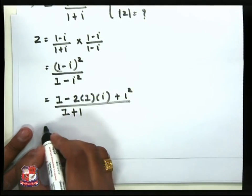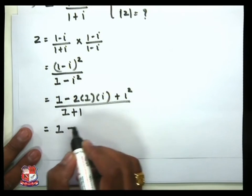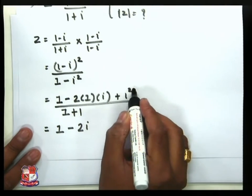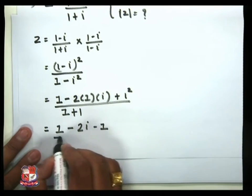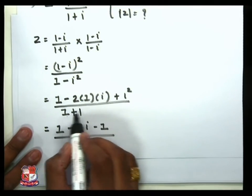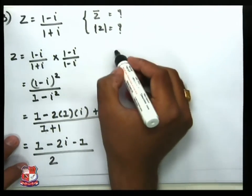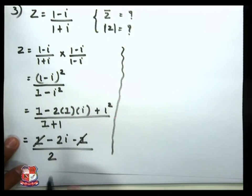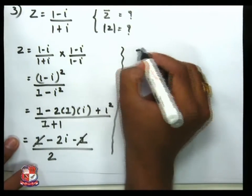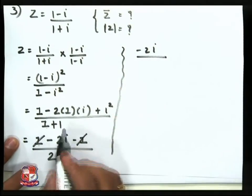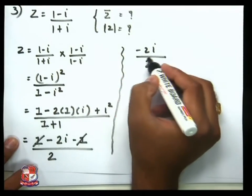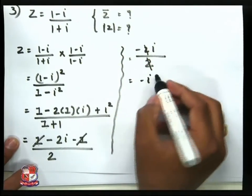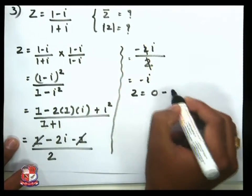The 2s cancel, giving our final simplified result z = −i, or equivalently z = 0 − i. Now we want to find z̄. The complex conjugate means we change the sign of the imaginary part. Since z = 0 − i, z̄ = 0 + i = i.